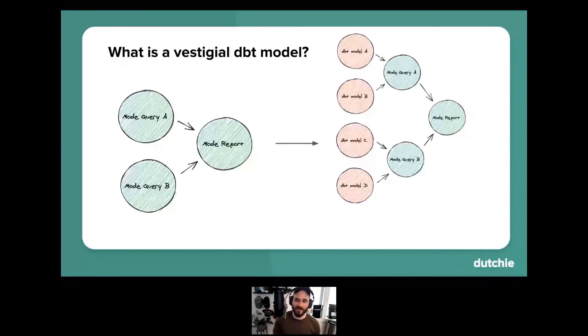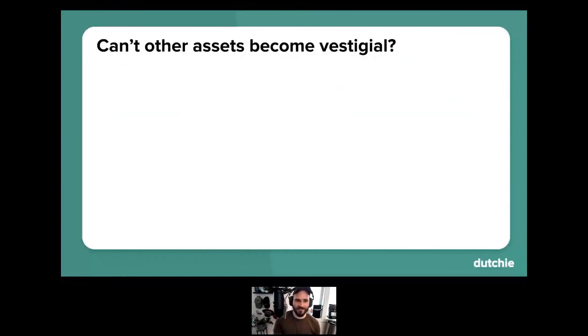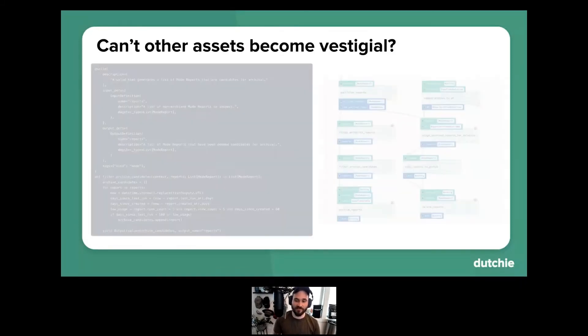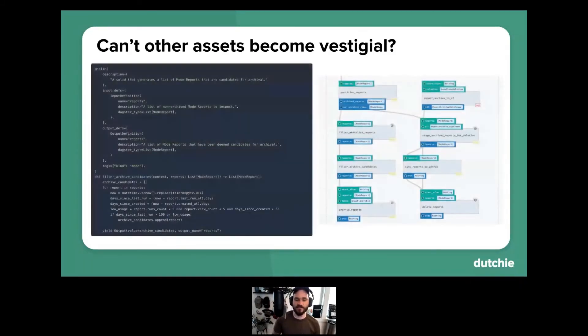But then we had another concern. Our other concern was, can't other kinds of data assets also become vestigial? So, for example, let's say we have a DBT model that does have a mode report downstream of it, but if no one's looking at that mode report, is the DBT model really being used? To help us account for situations like this, we automated a very similar process for mode reports that essentially routinely prune them on various usage metrics.